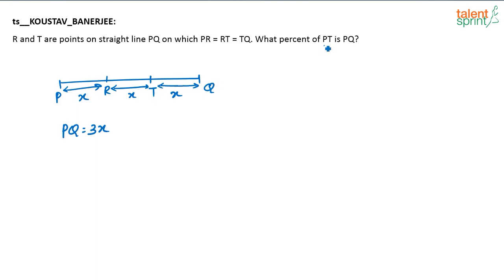Now what percentage of PT is PQ? PT is 2X. So what percentage of PT is PQ? PT comes in the denominator, PQ in the numerator. So that is 3X/2X = 3/2 × 100 = 150 percent.